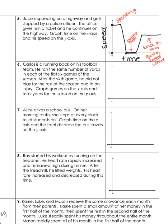I'm going to have you try number six on your own. This one says: Carlos is a running back on his football team. He ran the same number of yards in each of the first six games of the season. After the sixth game, he did not play for the rest of the season due to an injury. Graph the games on the x-axis and the total yards for the season on the y-axis. Think about what it's saying: he ran the same yards in each of the first six games. After the sixth game, he did not play — so what would happen to his yards?